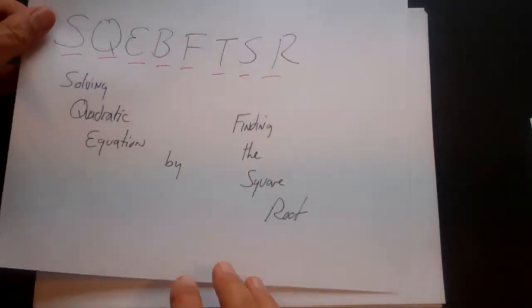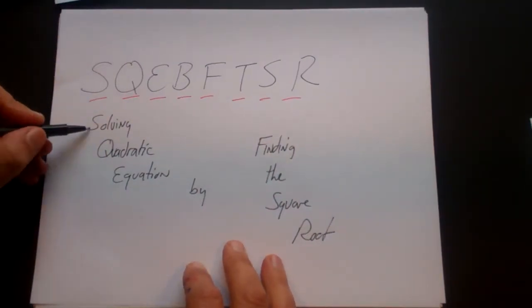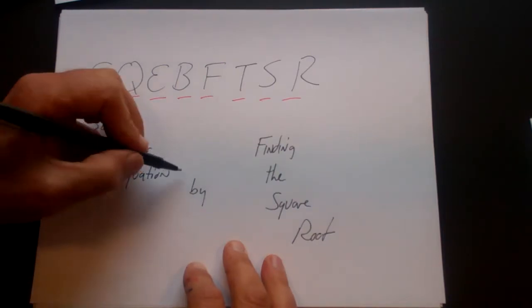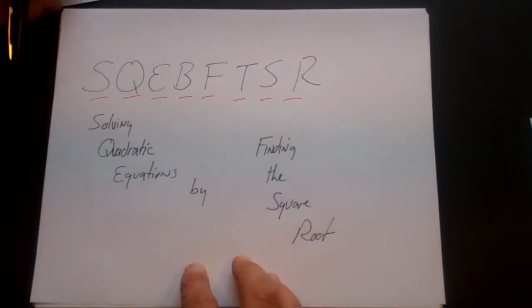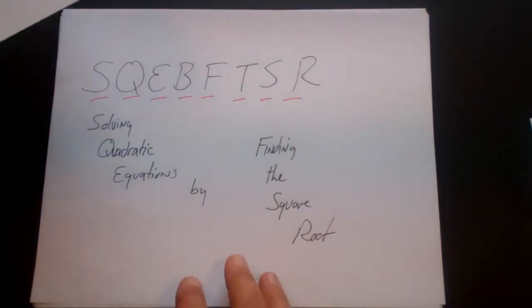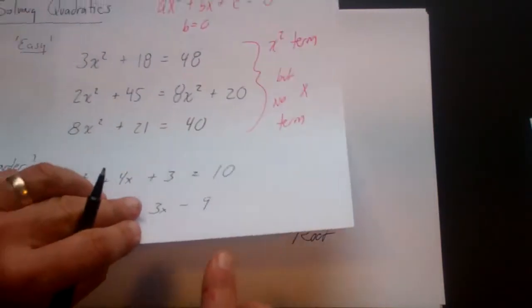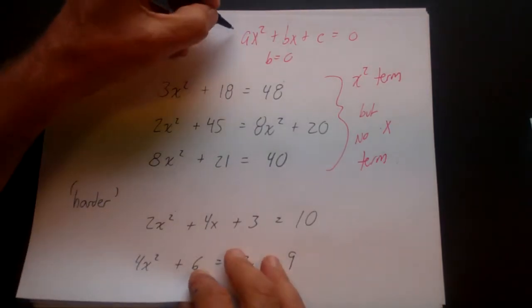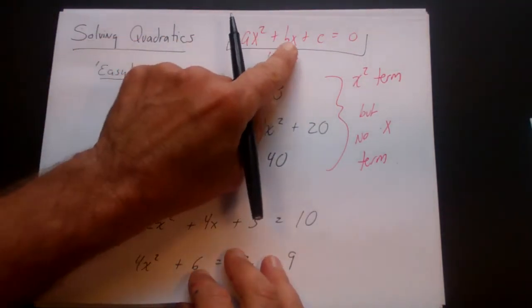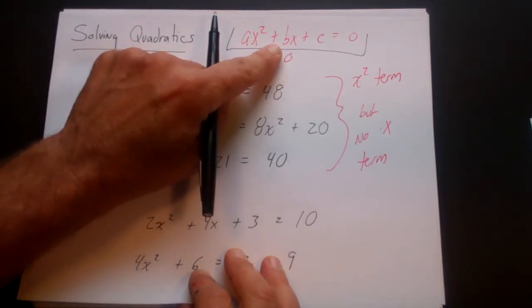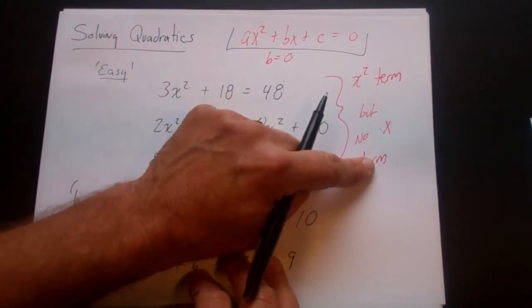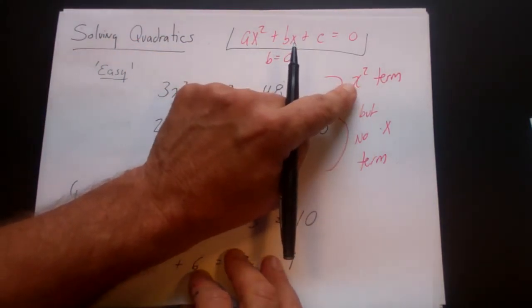Let's see what we mean by square footer problems. It's just a term I use to stand for solving quadratic equations by finding the square root. These are problems where b is equal to zero. If you think about a quadratic equation being ax squared plus bx plus c equals zero, whenever b is equal to zero, there's no x term — there's an x squared but no x term.